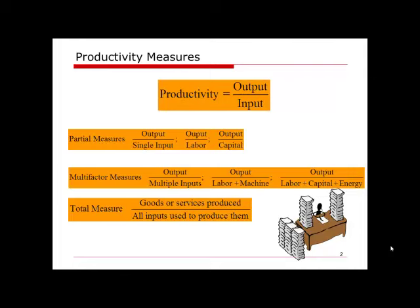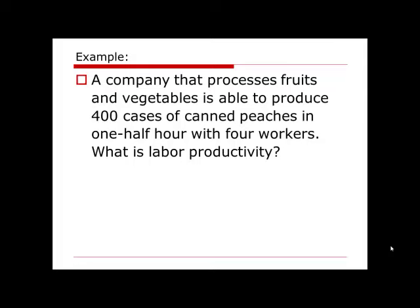Let's take a look at some examples. The first one: a company that processes fruit and vegetables is able to produce 400 cases of canned peaches in one half hour with four workers. What is labor productivity? It states clearly that labor productivity is what we need to calculate, so this is a partial productivity.